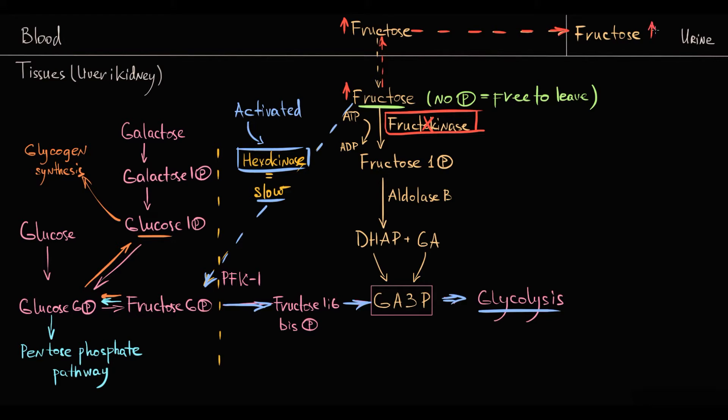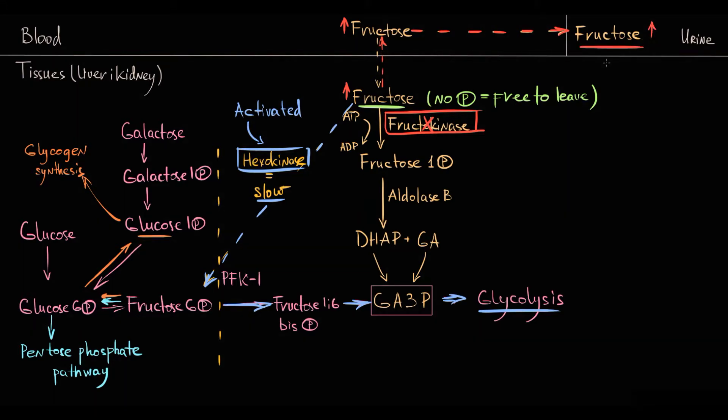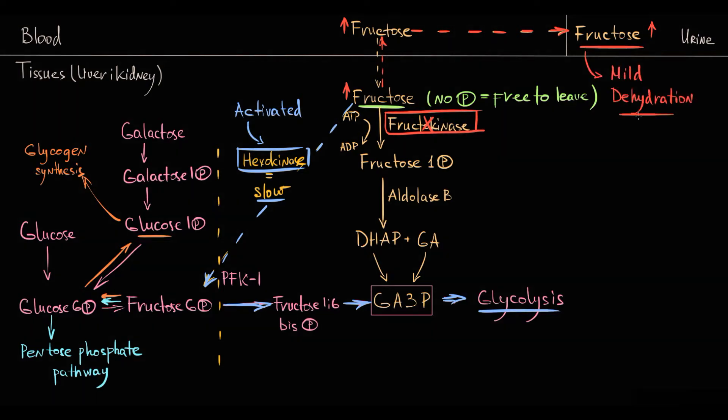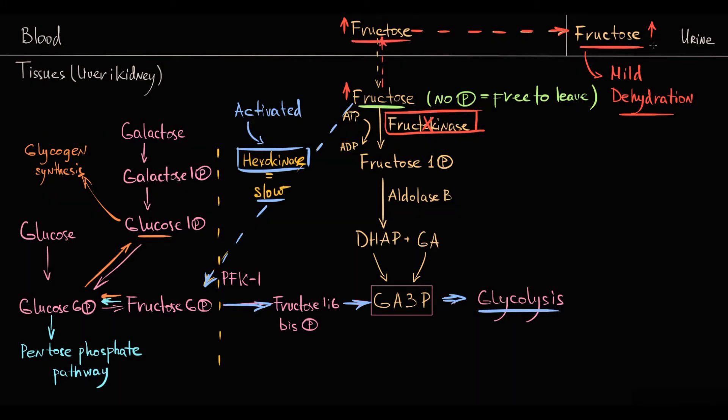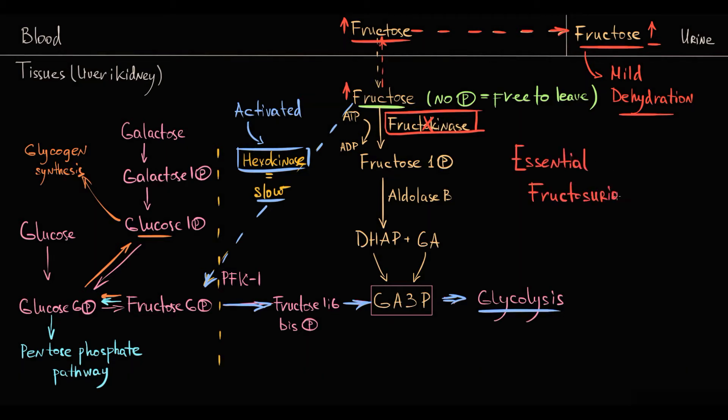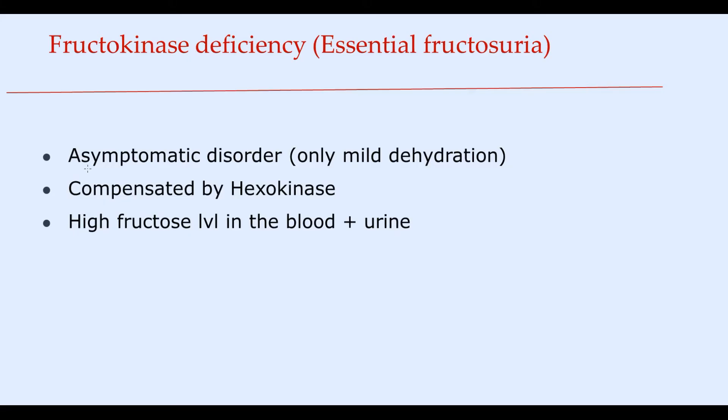Also, because fructose is an osmotically active substance, it attracts water molecules, thereby high fructose level in urine will cause mild dehydration. The diagnosis is based on determination of elevated fructose level in the blood and in the urine. Because this disorder is mostly asymptomatic and such patients have high fructose concentration in the urine, this condition is called essential fructose urea. So fructokinase deficiency, also called essential fructose urea, is an asymptomatic disorder that causes only mild dehydration.